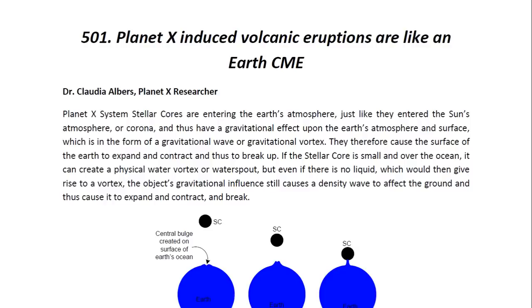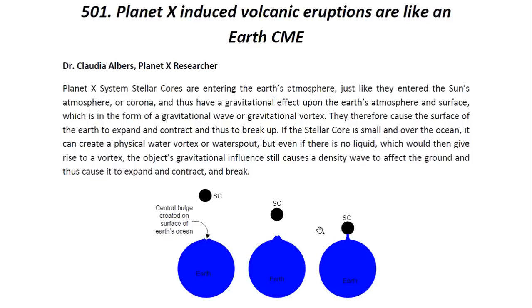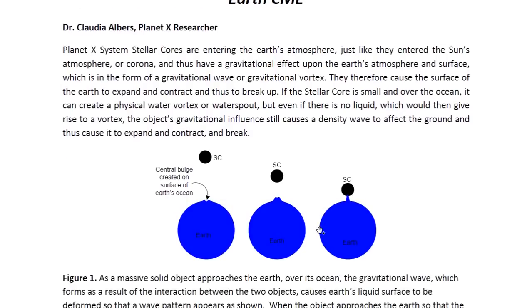Planet X systems stellar cores enter the Earth's atmosphere just like they enter the sun's atmosphere or corona, and thus have a gravitational effect upon the Earth's atmosphere and surface, which is in the form of a gravitational wave or gravitational vortex. They therefore cause the surface of the Earth to expand and contract, and thus to break up. If the stellar core is small and over the ocean, it can create a physical water vortex or waterspout. But even if there is no liquid to give rise to a vortex, the object's gravitational influence still causes a density wave to affect the ground, and thus cause it to expand and contract, and therefore break.